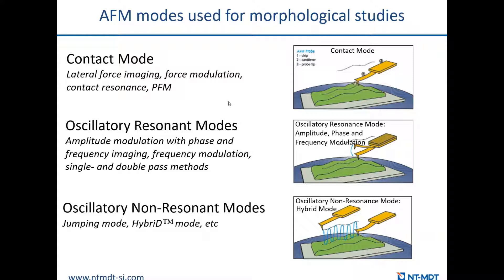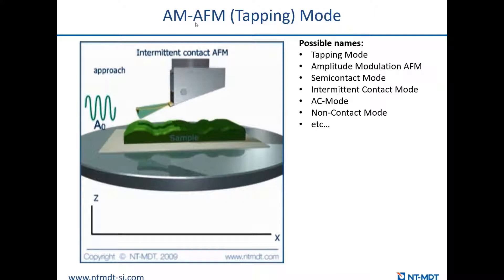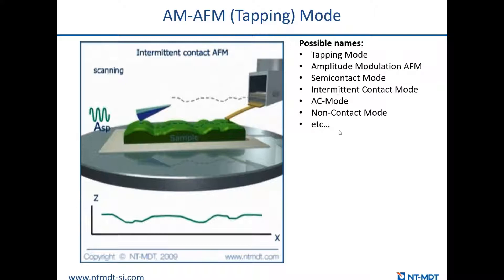There are mainly three ways of keeping interaction between the tip and the sample. First is contact mode. Second is oscillatory resonant mode, or amplitude modulation mode. Third is oscillatory non-resonance mode — we call it hybrid mode. During my talk I will mention all of them. Let's start with AM-AFM, Amplitude Modulated Atomic Force Microscopy. You may have heard other names for this mode: tapping mode, semi-contact mode, amplitude modulated AFM, etc. The principle is the same — we oscillate the cantilever at its resonance frequency mechanically.